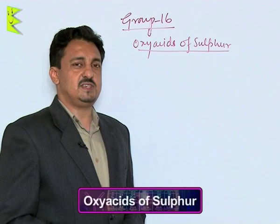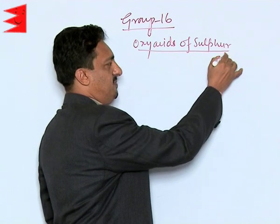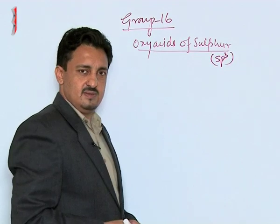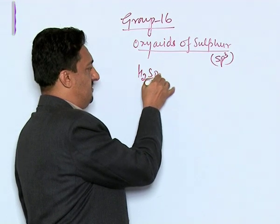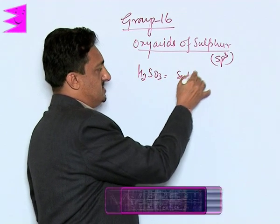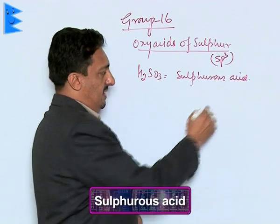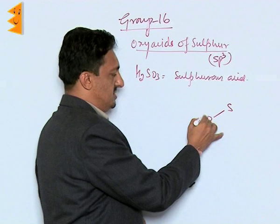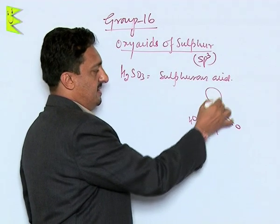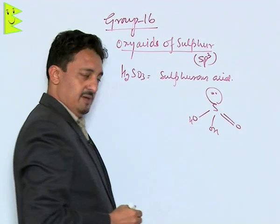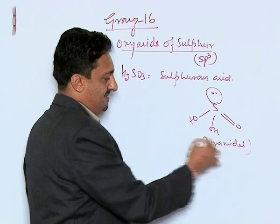Let us now look at the oxy acids of Sulphur. All oxy acids of Sulphur are SP3 hybridized. The first oxy acid is H2SO3 (sulphurous acid), which has two OH groups, one doubly-bonded oxygen, and one lone pair, giving it a pyramidal structure.